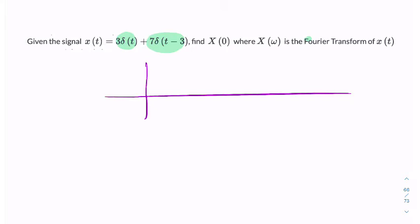So our signal will look something like this: an impulse at 0 and a larger impulse at 3. And we want the Fourier transform of that.